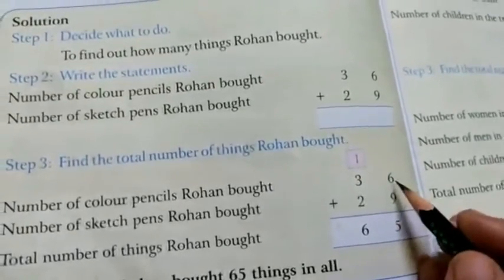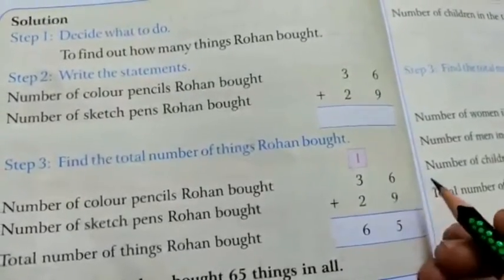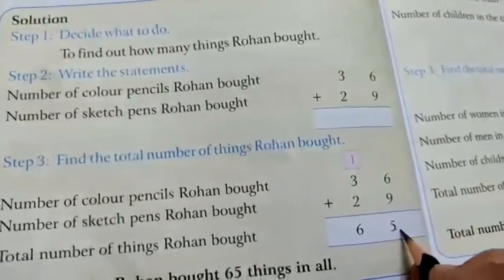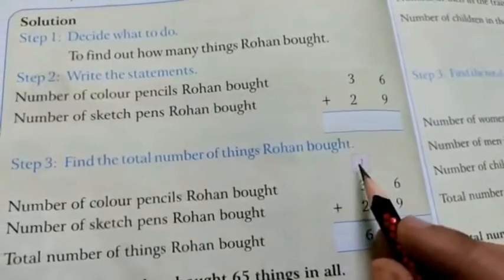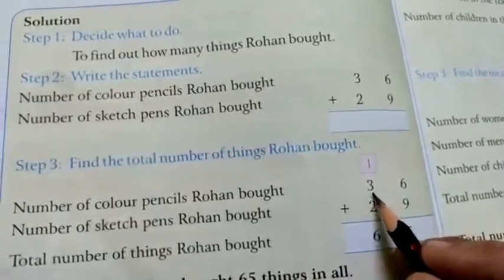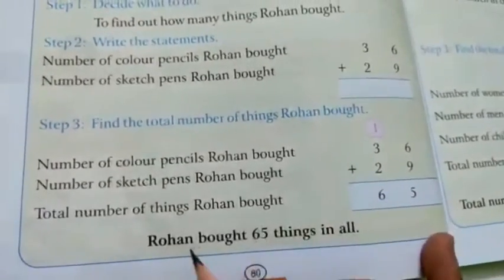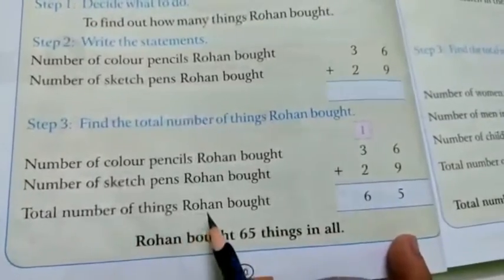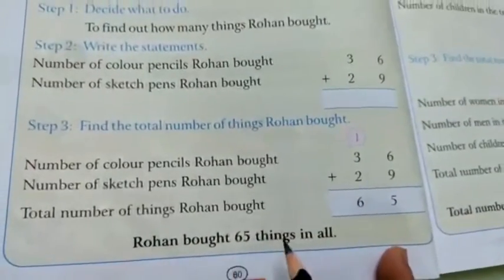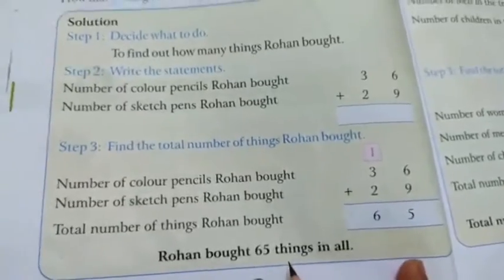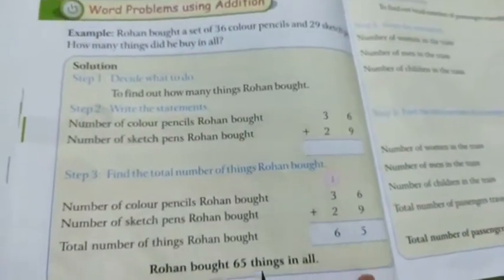So 6 plus 9, so it's 15. So 5 down, 1 carry over. 3 plus 1, 4 plus 2, 6. So total number of things Rohan bought 65. Rohan bought 65 things in all.